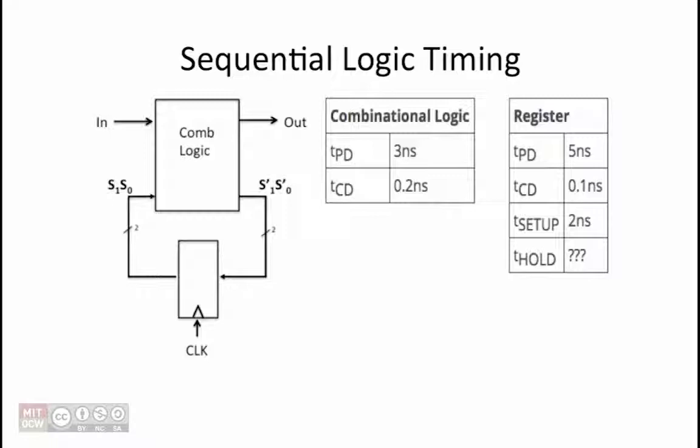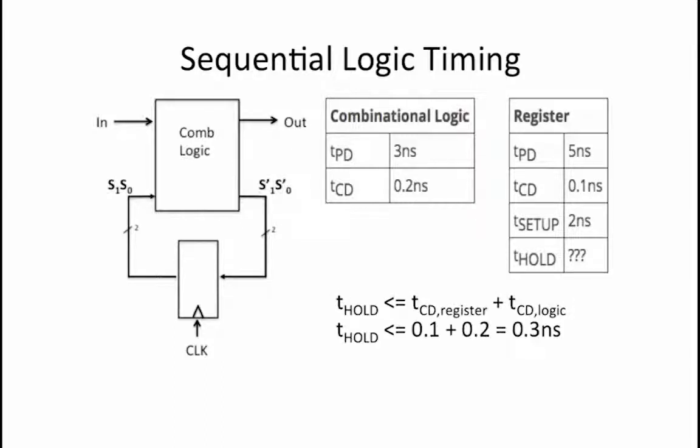In order to satisfy the hold time of the register, the input to the register must remain stable until t hold after the clock edge. The fastest that a new change can propagate to the input of the register is found by taking the sum of the contamination delays along the shortest path to that input.